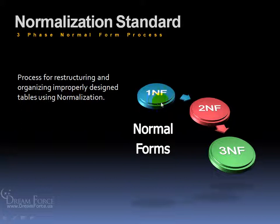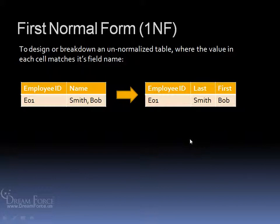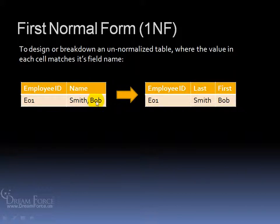You have what's called the First Normal Form, Second Normal Form, and Third Normal Form. The First Normal Form is to design or break down an un-normalized table where the value in each cell matches its field name. For example, over here we have the table — does the value Employee ID match the field name Employee ID? Of course. Does the last name value match the field name 'Name'? No. First name, 'Name'? No. So we break it down and say the last name has the last name field name, the first name has the first name field name. Last to last, first to first.